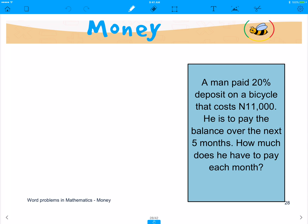A man paid 20% deposit on a bicycle that costs 11,000 Naira. He is to pay the balance over the next 5 months. How much does he have to pay each month?